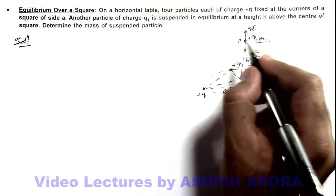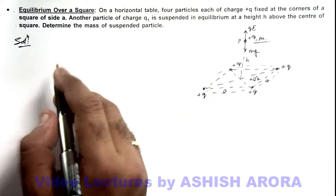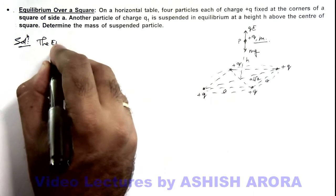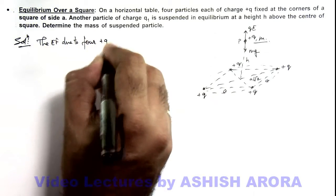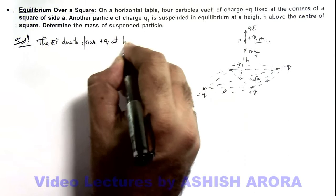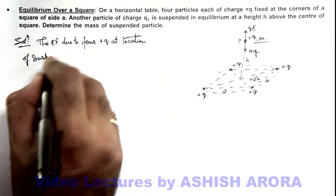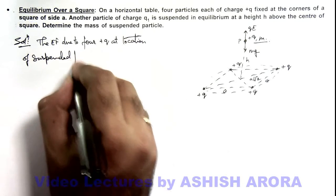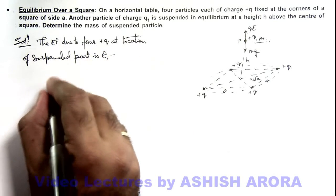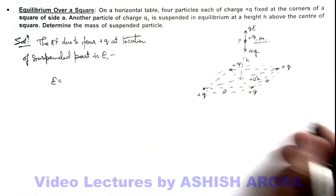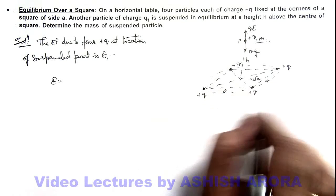If the charge is located at point P on the axis of this ring, here we can say the electric field due to four plus q at location of suspended particle is E. This can be directly given by the result of uniformly charging because here four charges are uniformly fixed at symmetrical locations on a ring.